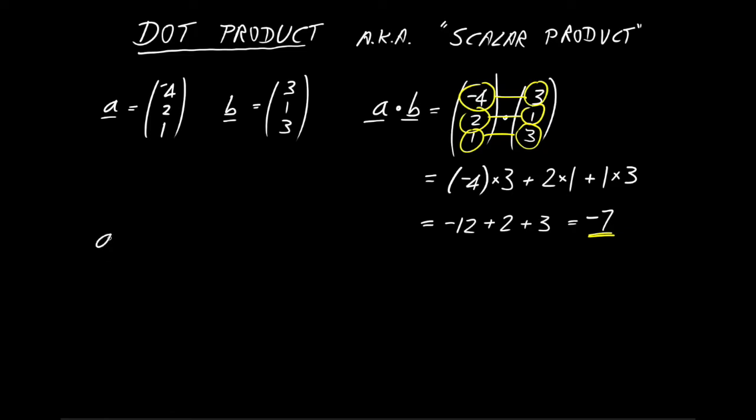Now let's see what happens if we do the dot product of a vector with itself. Let's do a dotted with itself. That's going to be -4, 2, 1 dotted with -4, 2, 1. Because we're multiplying each component by itself, that will always be a positive number: 16 from -4 by -4, 4 from 2 times 2, and 1 from 1 times 1. That's going to add up to 21. It must add up to a positive number.